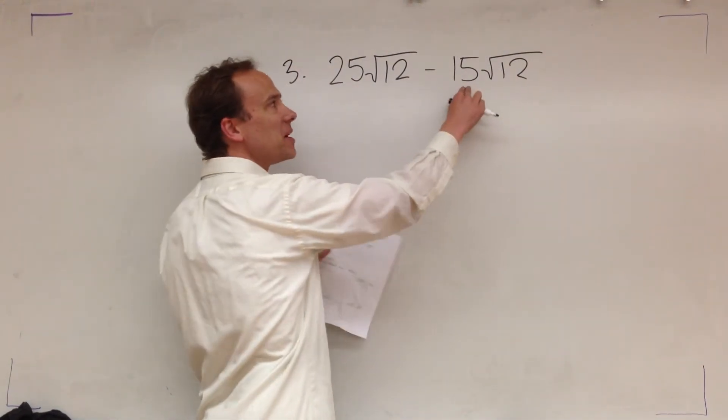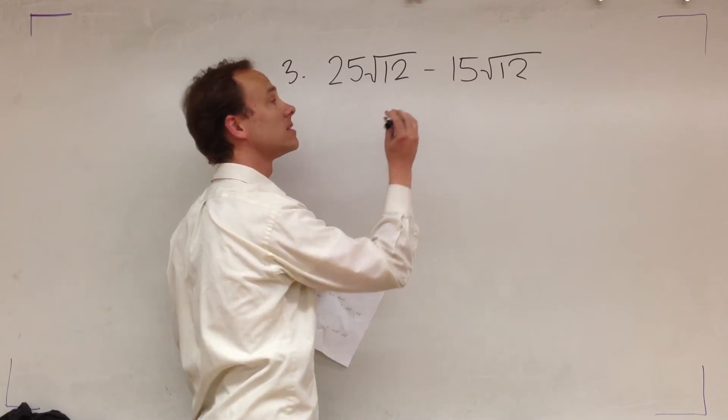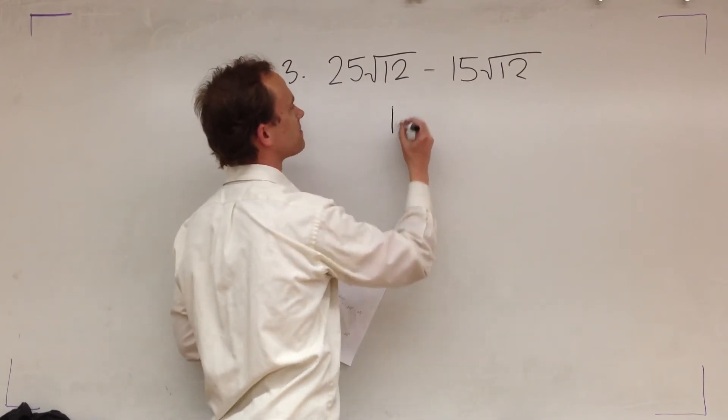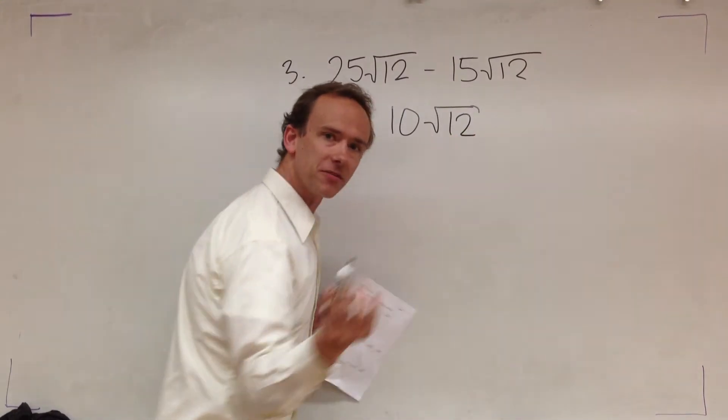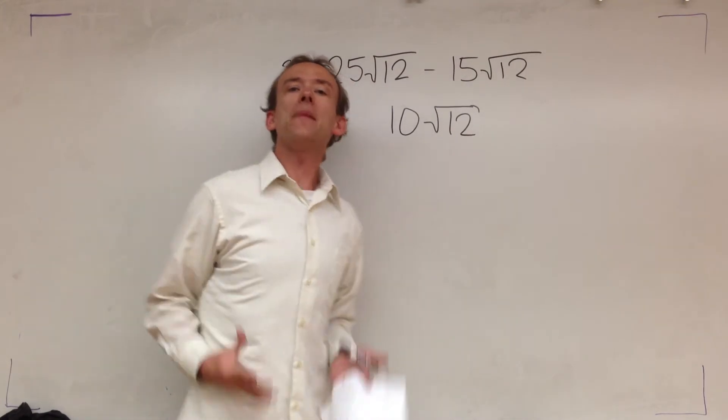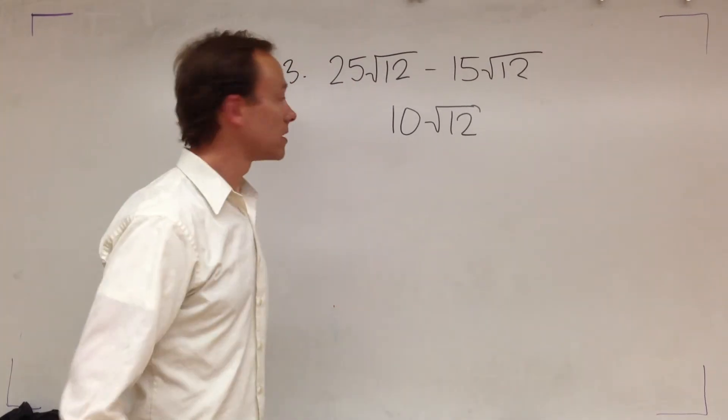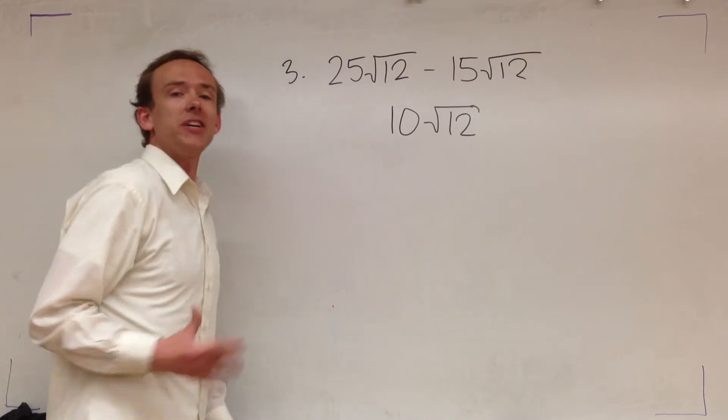Look. 25 minus 15. That gives you 10 root 12. Here's the difference. Am I done? Am I done? No! You should say no! You're not done yet, Mr. Miller.